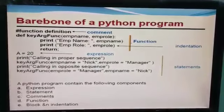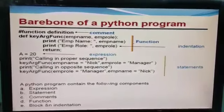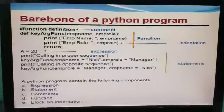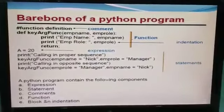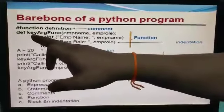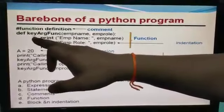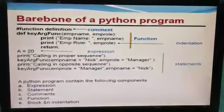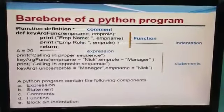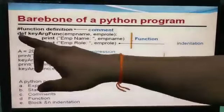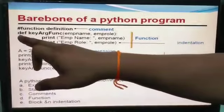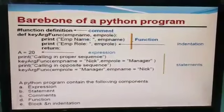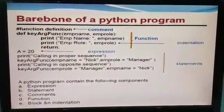Functions we can create in Python — we can define them on our own. Here we have created our function using the keyword argument function name. Whenever we have to create a function, we have to use the keyword 'define'. The short form we use is 'def'.